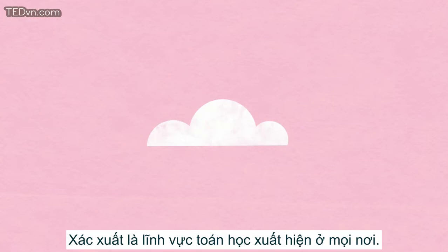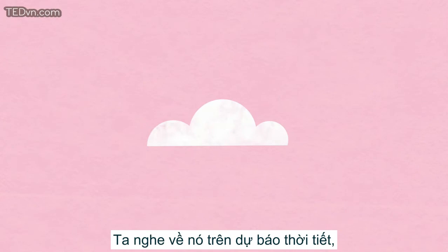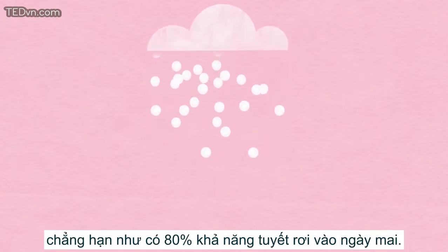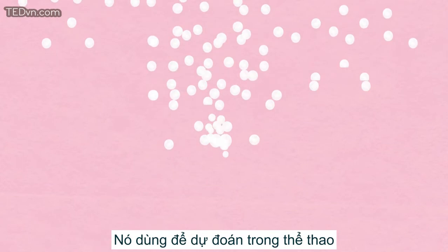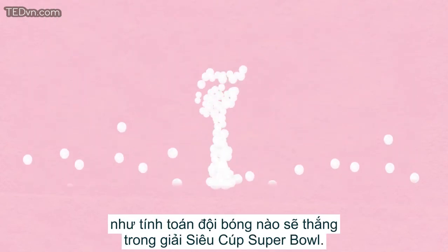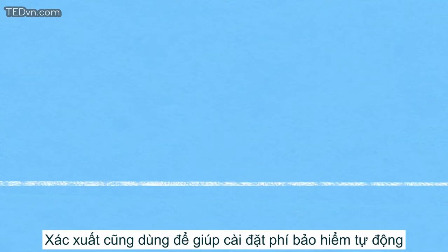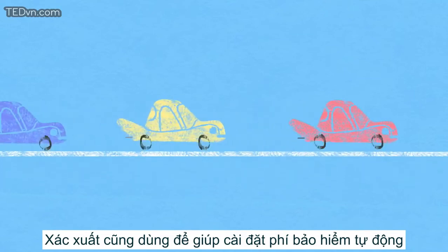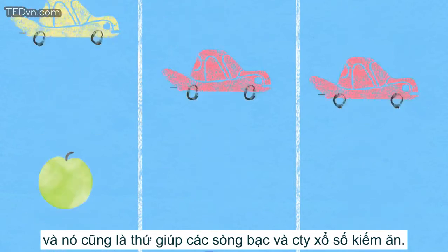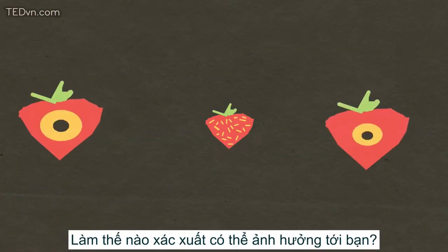Probability is an area of mathematics that is everywhere. We hear about it in weather forecasts, like there's an 80% chance of snow tomorrow. It's used in making predictions in sports, such as determining the odds for who will win the Super Bowl. Probability is also used in helping to set auto insurance rates and is what keeps casinos and lotteries in business. How can probability affect you?